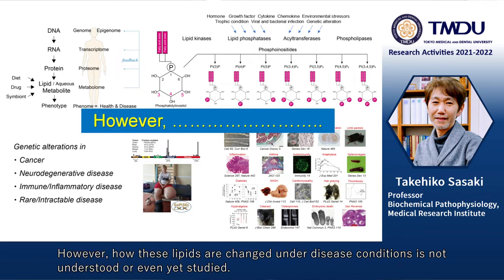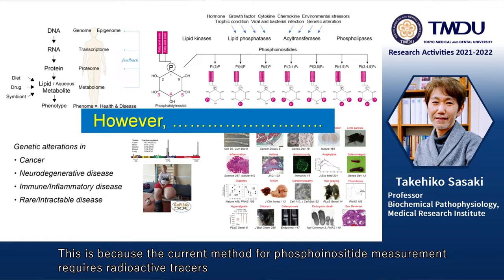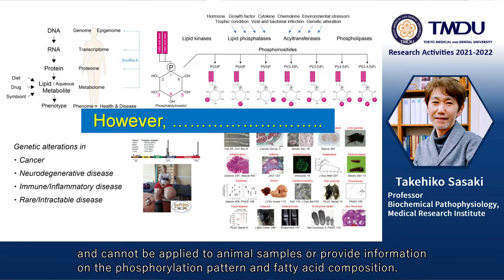However, how these lipids are changed under disease conditions is not understood or even yet studied. This is because the current method for phosphoinositide measurement requires radioactive tracers and cannot be applied to animal samples or provide information on the phosphorylation pattern and fatty acid composition.